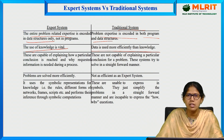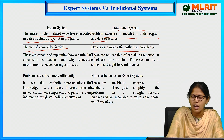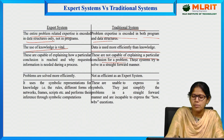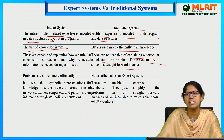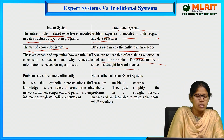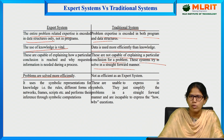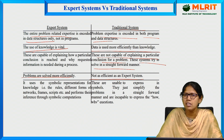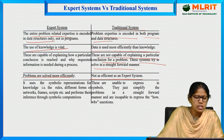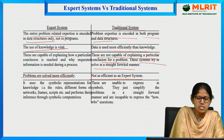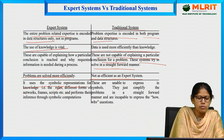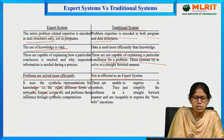Expert systems explain and reason the solution. In contrast, traditional systems are not capable of explaining a particular conclusion — they try to solve problems in a straightforward manner. Problems are solved more efficiently in expert systems than in traditional systems. Expert systems use symbolic representation for knowledge — rules, different forms of networks, frames, scripts — and perform inference through symbolic computations.